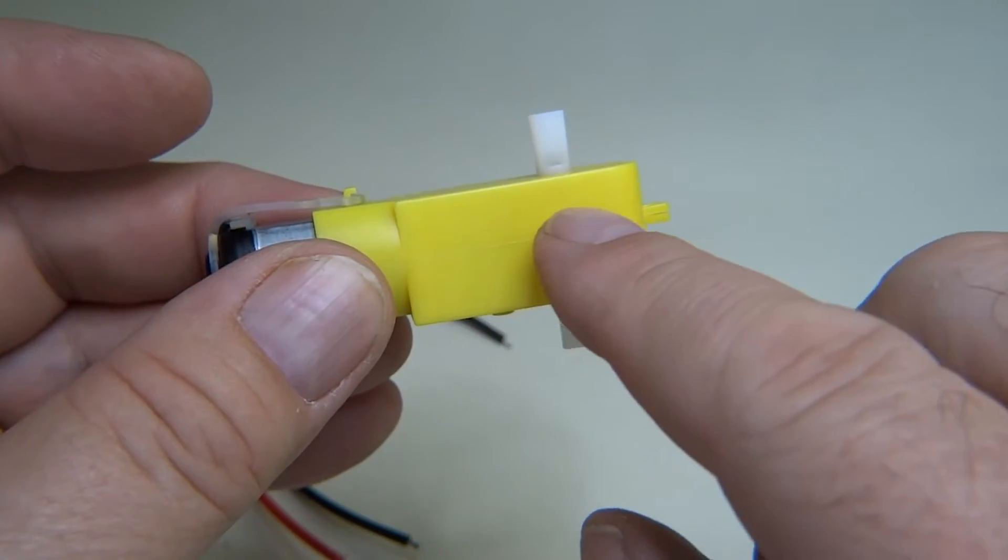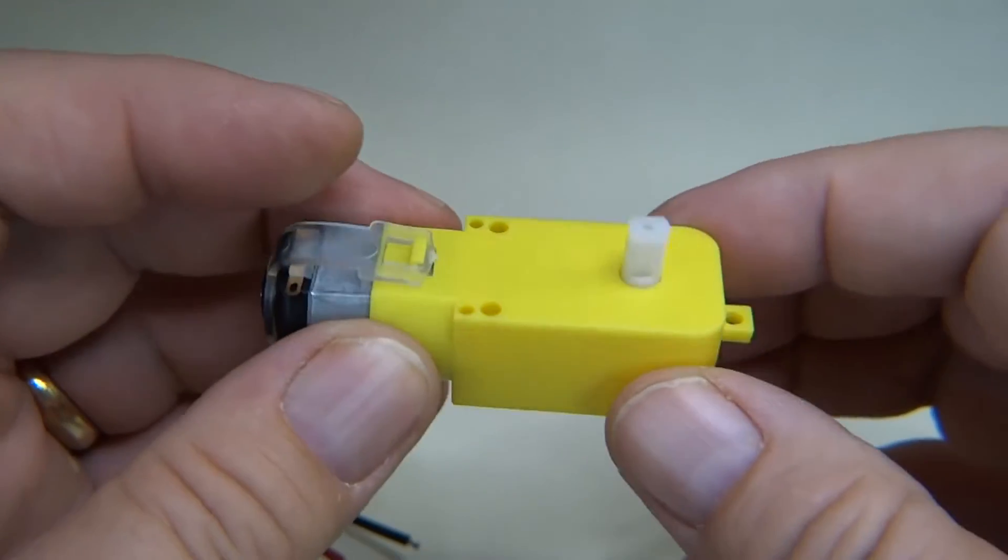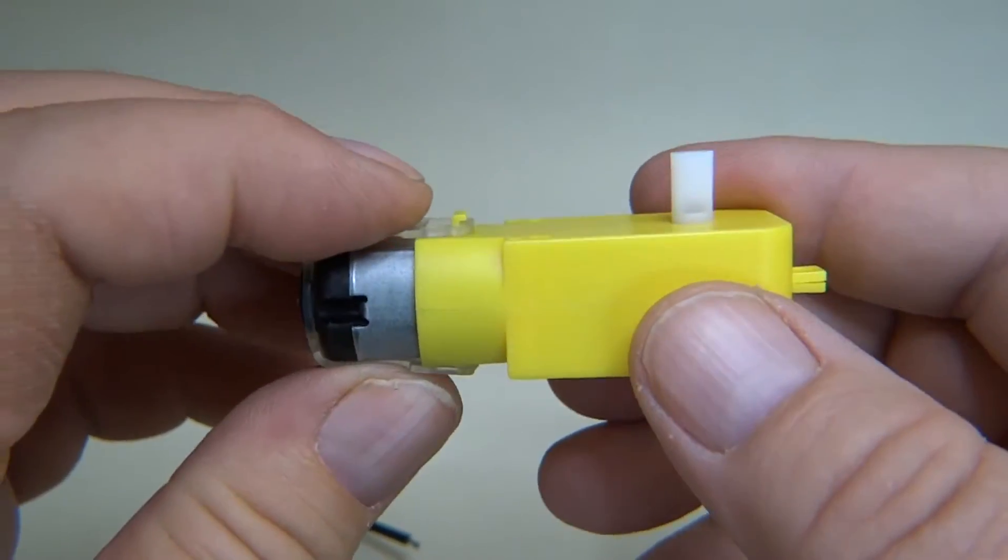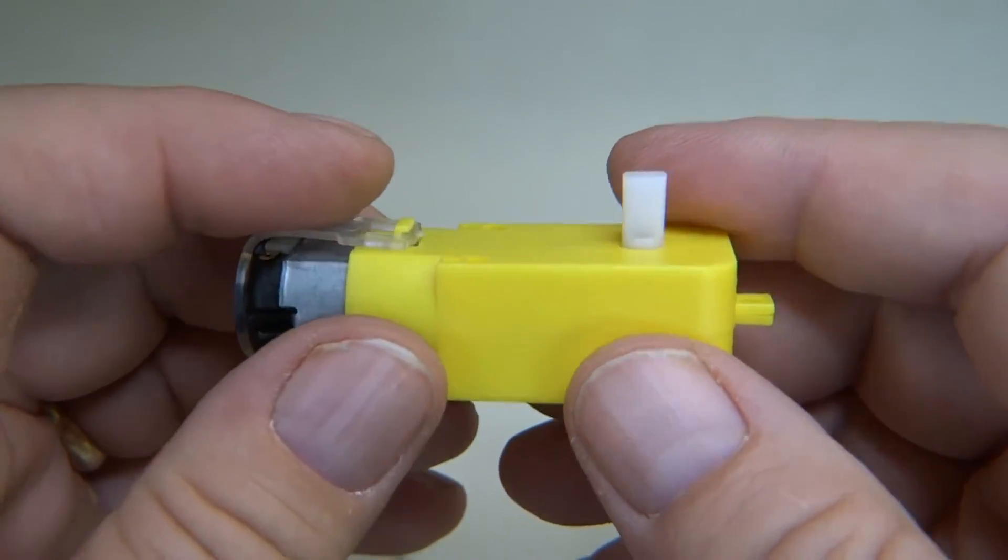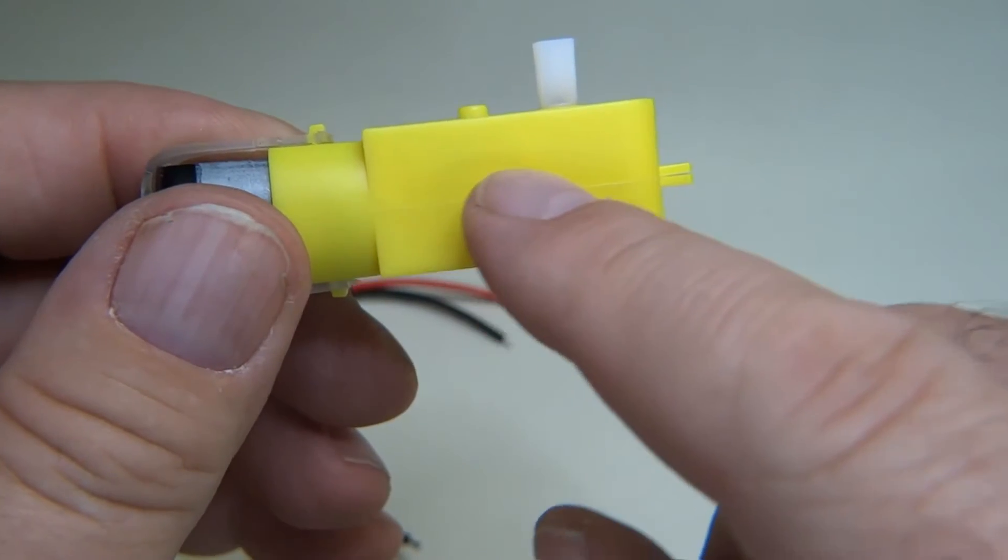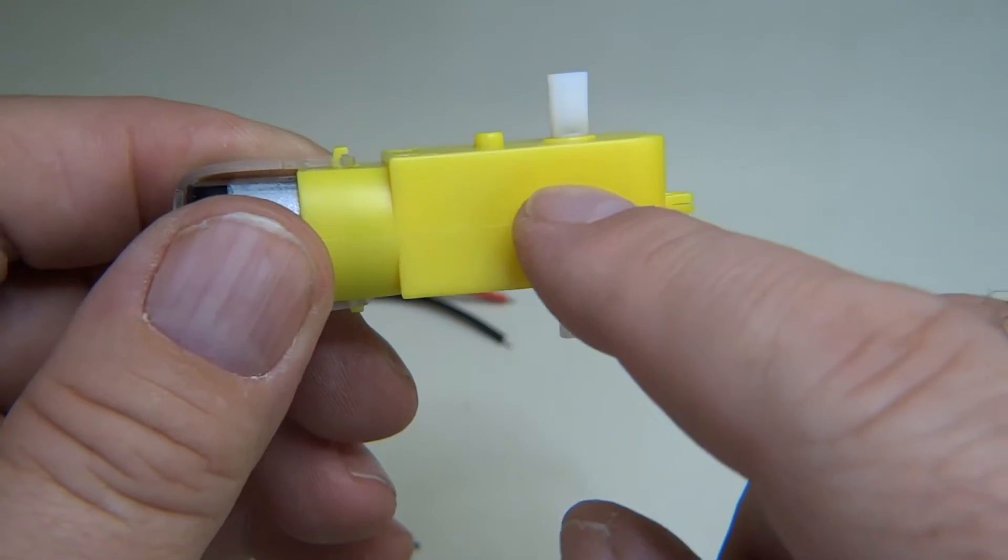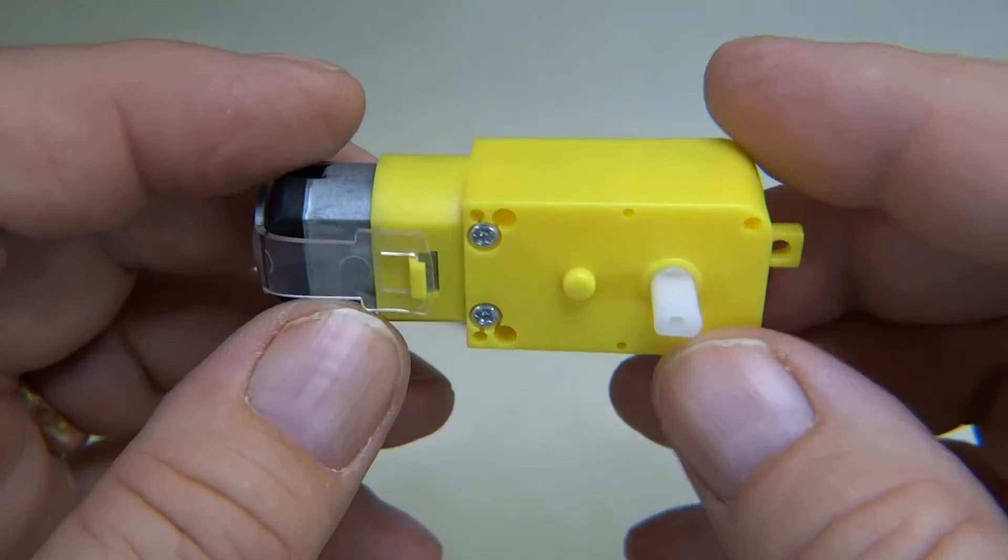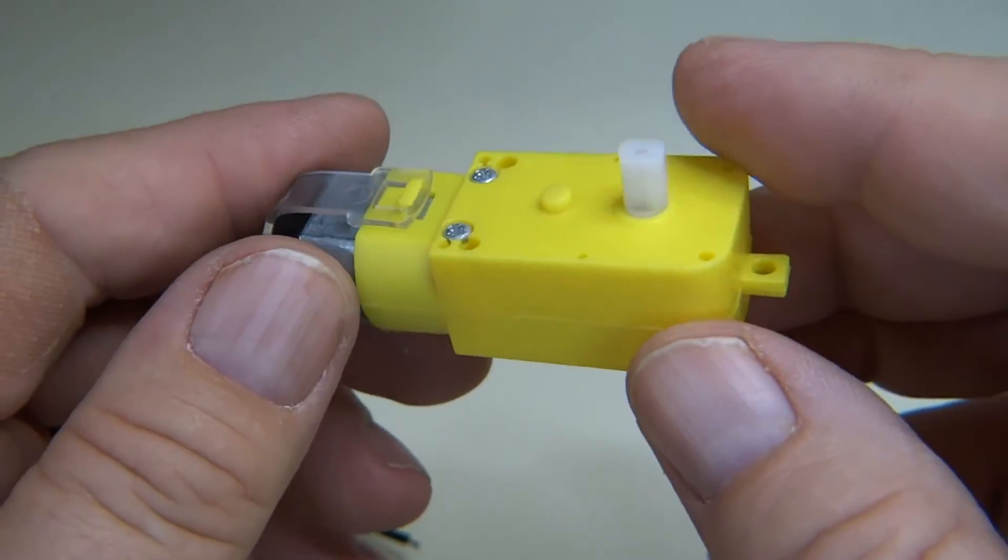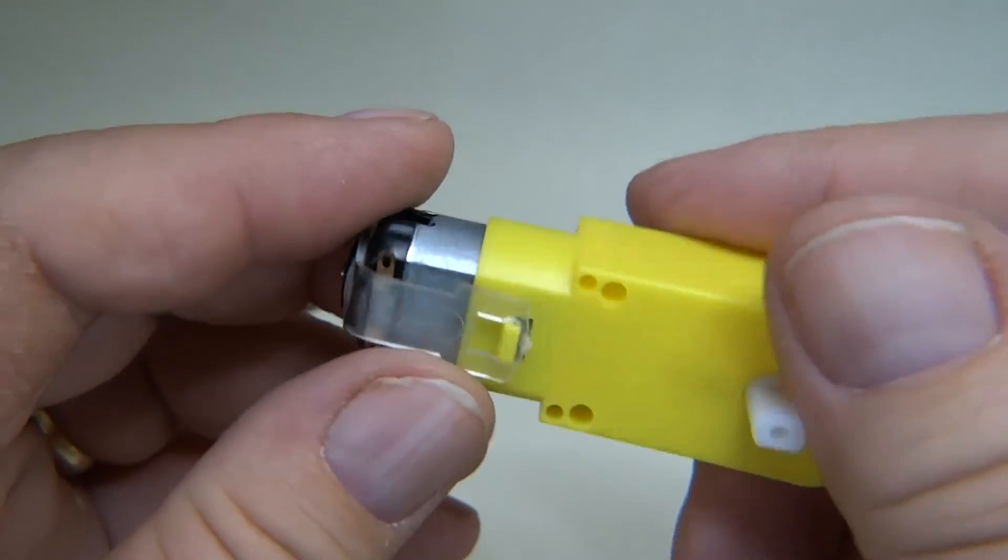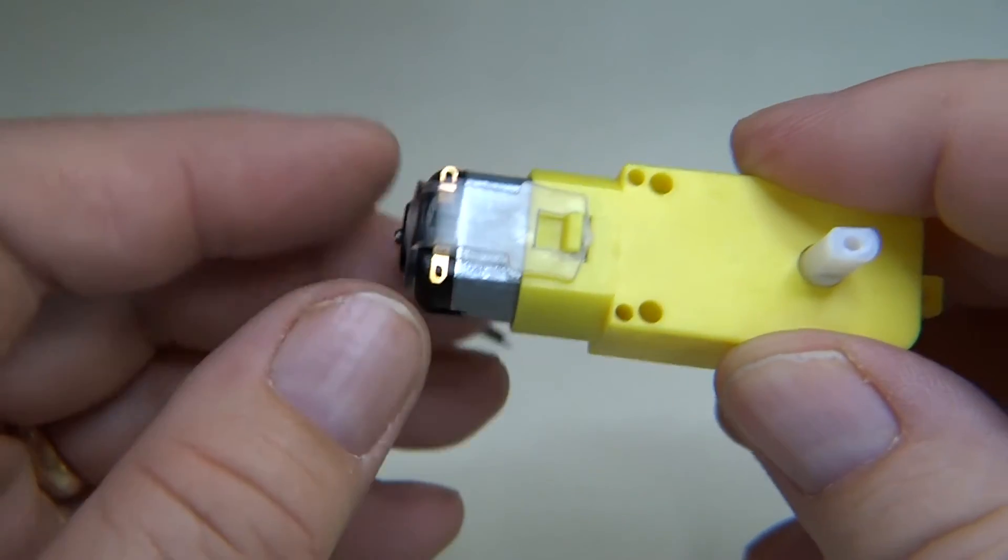And then inside this yellow piece here, it takes the motor speed which is normally very fast - it would be like spinning this shaft around really fast. And then this is a gearbox which gears it down so that you can get better traction and control the speed better. So when we solder, we got to be careful not to melt this plastic piece.